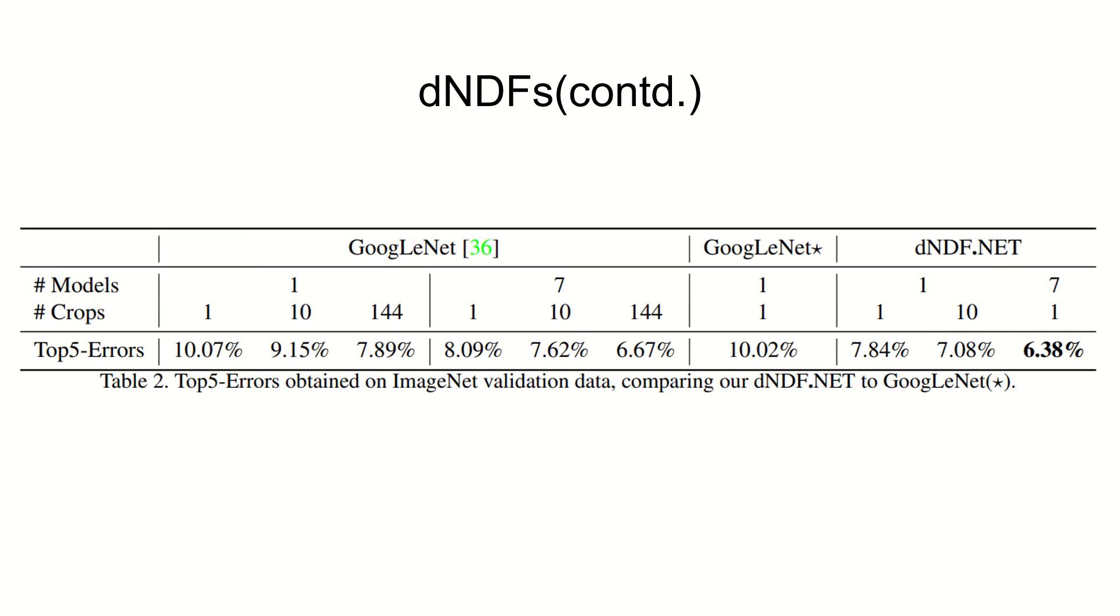After that they ran it for large scale image recognition with GoogLeNet and GoogLeNet star, which is a modified version of GoogLeNet, as baselines and dNDF.net. As you can see, dNDF has bested the previous result by almost 0.3%.